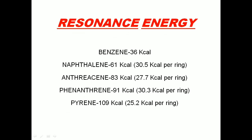The resonance energies of these fused aromatic compounds are: benzene 36 kcal/mol; naphthalene 61 kcal/mol (30.5 per ring); anthracene 83 kcal/mol (27.7 per ring); phenanthrene 91 kcal/mol (30.3 per ring); and pyrene 109 kcal/mol (25 kcal per ring). Among all fused aromatic compounds, pyrene is the most unstable because its per-ring resonance energy is the least.